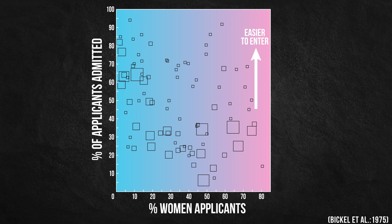Departments which had more female applicants are positioned to the right of this plot, and departments which had more male applicants are positioned to the left. There were 85 departments considered in this study, each with a different number of applicants indicated by the size of the box. If we fit a trendline to this data, we see that the trendline slopes downward, indicating that women tended to apply to competitive departments with lower admission rates, whereas men tended to apply to less competitive departments with higher admission rates.